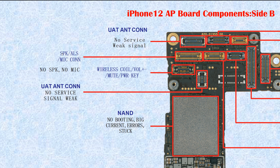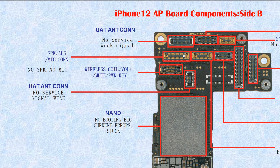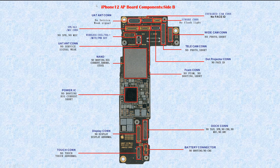This connector is for the speaker, ALS, and mic — speaker, ambient light sensor, and microphone connector. If broken, it causes no speaker, no ALS, or no microphone. ALS means ambient light sensor. This one is the U80 antenna connector — up antenna connector. If broken, it causes no service or weak signal. That's all for iPhone 12 AP board Side B.